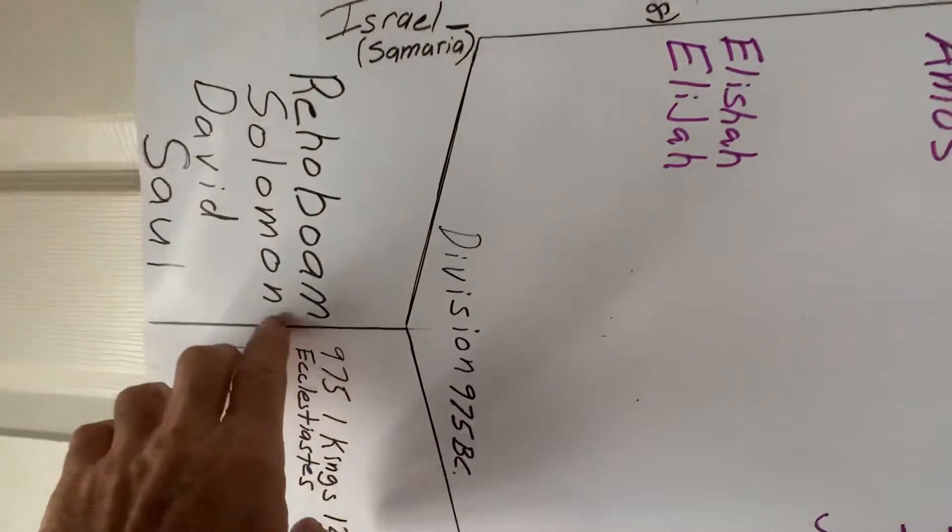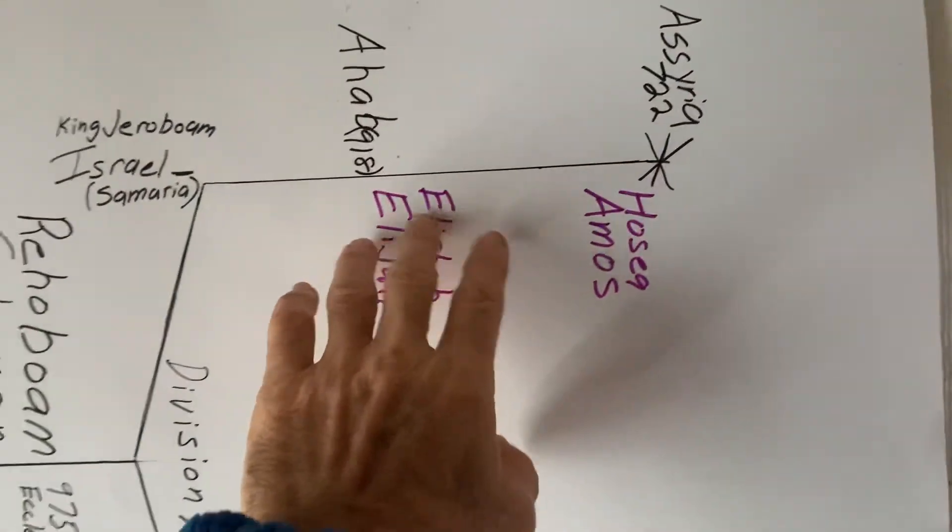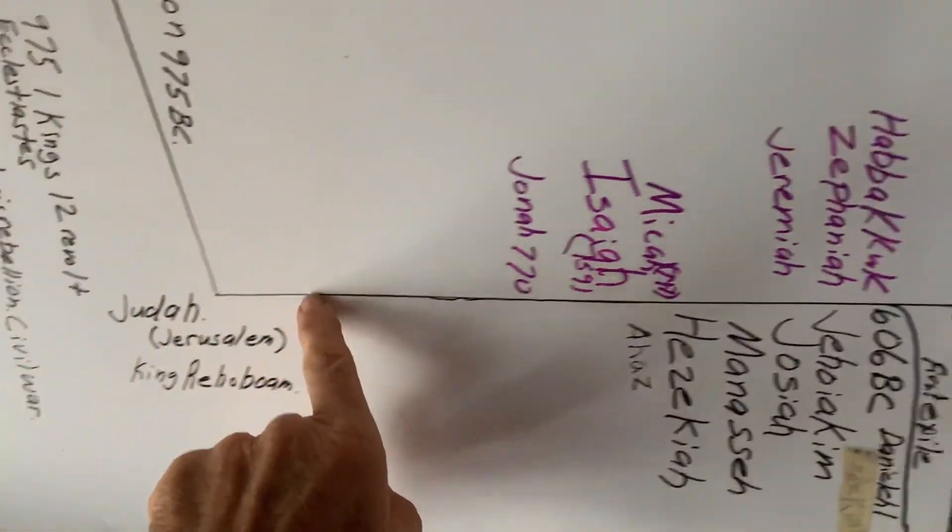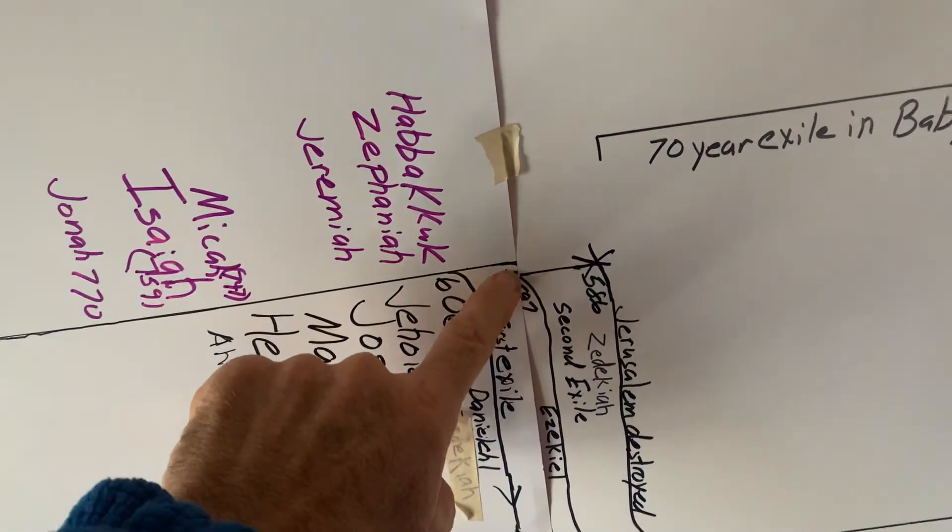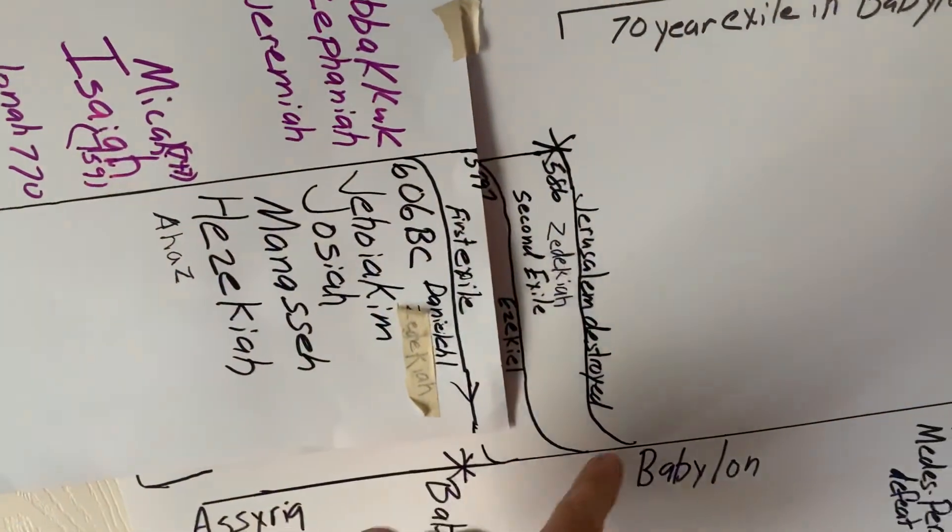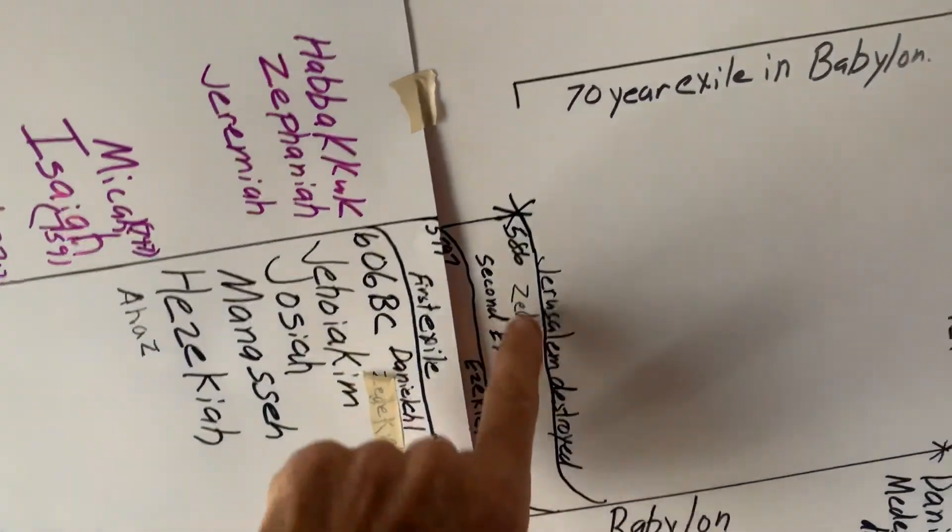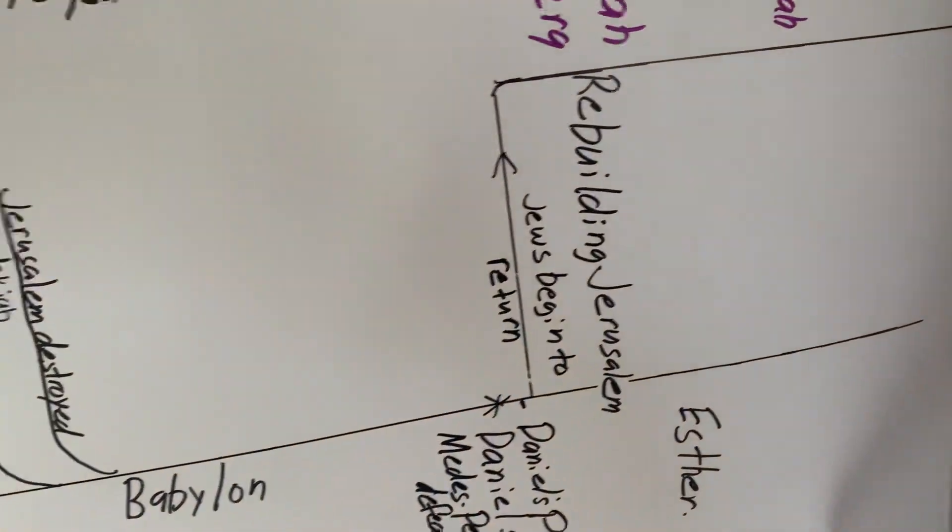That is the general flow of Old Testament history. A united kingdom, a divided kingdom. The north gets destroyed, 722 before Christ. And the southern kingdom of Judah, where history goes forward in not only Jerusalem but also in Babylon at the same time. And finally, it goes forward only in Babylon. Talk to you guys soon.